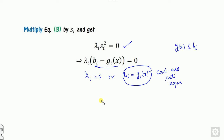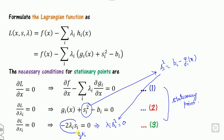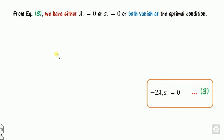What is the physical significance of lambda? It is nothing but the rate of variation of f with respect to the availability vector b. That is, lambda i is nothing but the partial derivative of f with respect to bi. The condition lambda i times si equals zero means either lambda is 0, or si is 0, or both vanish. So there are two cases: one case is when si is non-zero, meaning lambda i is 0; the other case is when lambda is non-zero, meaning si is 0.